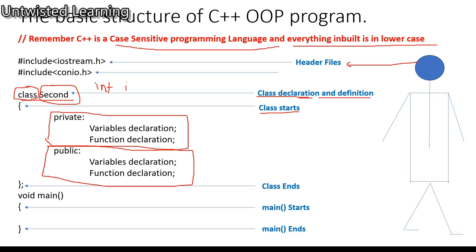You can write multiple classes one after the other. After all the classes have been written, you give void main — void main starts and ends with no semicolon. In the case of a class you must give a semicolon, but since void main is a function, there is no need for a semicolon.